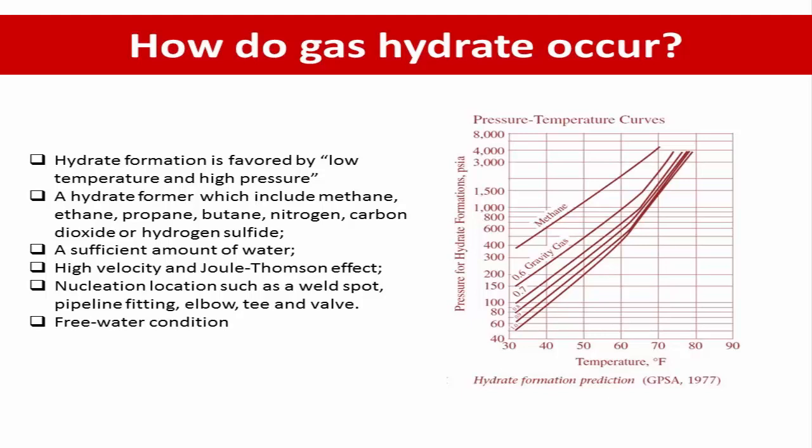How do gas hydrates occur? The formation of hydrate requires the following three conditions. The first condition is the right combination of temperature and pressure. Hydrate formation is favored by low temperature and high pressure.